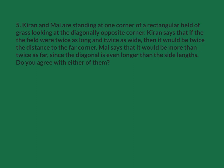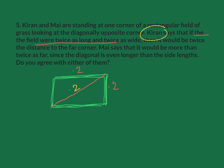Our last problem: Karan and Mai are standing at a corner of a rectangular field of grass. We're assuming we're at a football field or soccer field. So we'll make a little sketch of this rectangle. They're looking at the diagonal from one corner to the opposite corner. Karan says if the field were twice as long and twice as wide, then the distance would also be times 2. Mai says it would be more than twice as far, since the diagonal is longer than the side lengths. Do you agree with either of them?